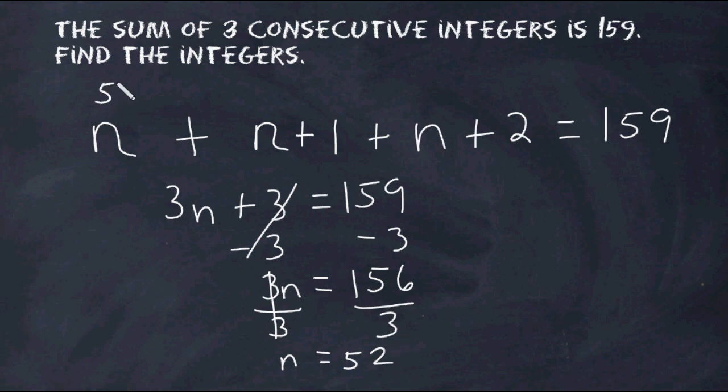So our first integer is 52, our second integer is 53, and the third integer is 54. And if we were to add these together, they would in fact equal 159.